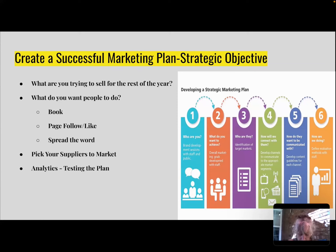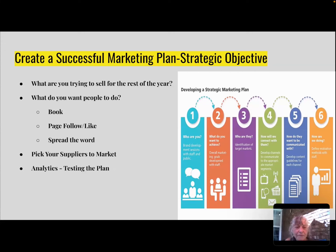We always follow the 4-2-1 process. The 4-2-1 process is: four posts about travel, two posts about yourself, and one hard sell. Four posts about travel — tell them about a travel update, like vaccination requirements stopping on Carnival Cruise. That's big. I do travel tips a lot and people really like that. Why am I sharing it? Because I want people to follow and like my page and spread the word about my business. That's the objective with those travel posts.